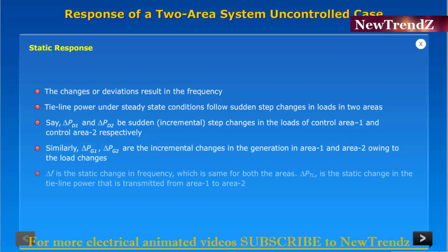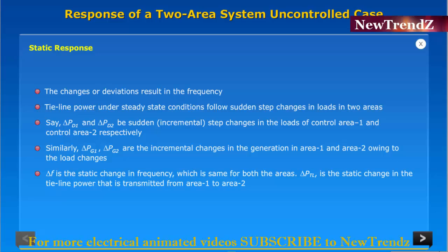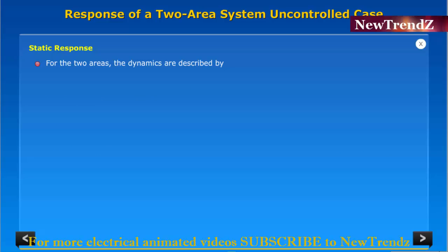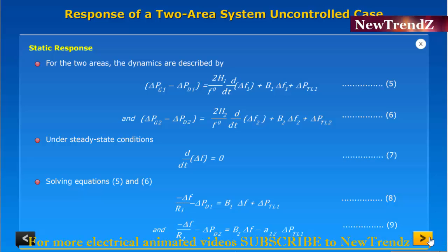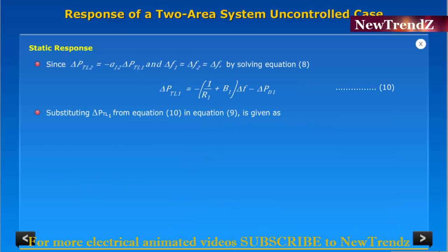Delta F is the static change in frequency, which is the same for both areas. Delta PtL is the static change in the tie line power transmitted from area one to area two. For the two areas, the dynamics are described under steady-state conditions. Solving equations 5 and 6, and substituting Delta PtL1 from equation 10 into equation 9 gives the resulting expression.